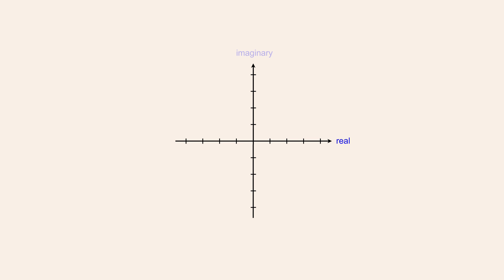In 1799, mathematician and cartographer Caspar Wessel suggested that i be represented as a position on an imaginary number line oriented perpendicular to the real number line. The number i would be represented as a point on that vertical line one unit distance above the origin. The number 2i would then be a point two units above the origin, and so on. Likewise, negative imaginary values would be represented as points below the origin. Since i can be multiplied by any real quantity, the imaginary number line would contain an infinite number of points representing an infinite number of imaginary numbers, in the same way that the real number line represents an infinite number of real numbers.